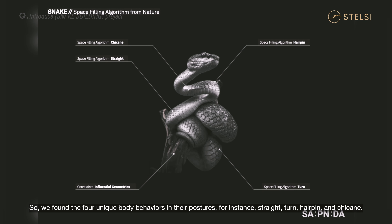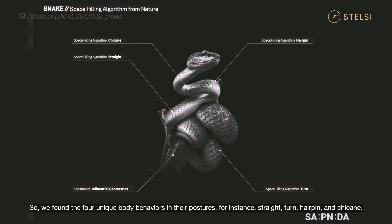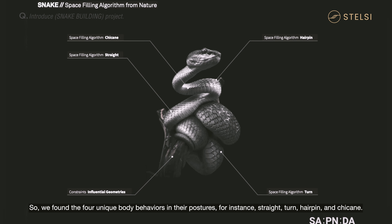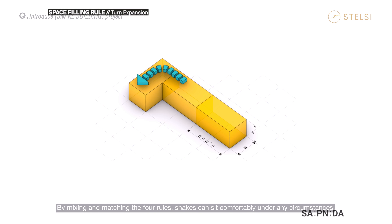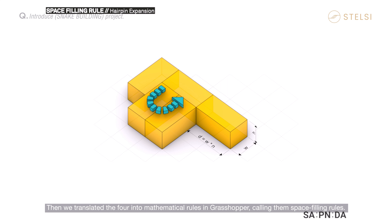We found four unique body behaviors in their posture — for instance, straight, turn, hairpin, and succane. By mixing and matching these four rules, snakes can sit comfortably under any circumstances. We then translated the four into mathematical rules in Grasshopper, calling them space filling rules.